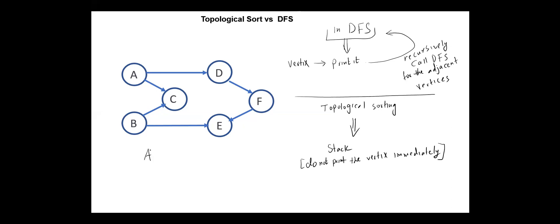For example, in this graph, the vertex A should be printed before the vertex C. But unlike the depth-first search, the vertex B should also be printed before vertex C. One of the topological orderings for this graph is A, B, D, F, E, C.